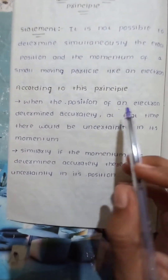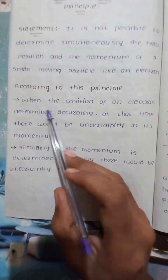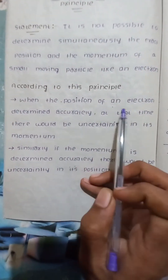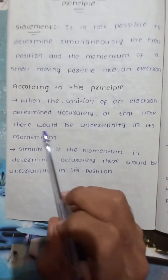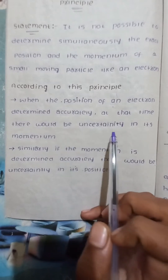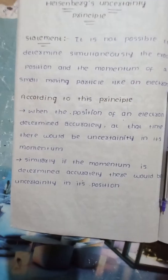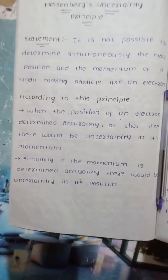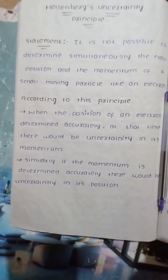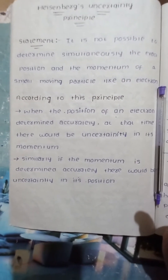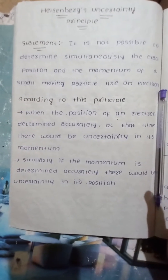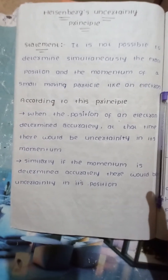According to this principle, when the position of an electron is determined accurately, at that time there would be uncertainty in its momentum. If we determine the exact position of an electron accurately, there would be uncertainty in its momentum.